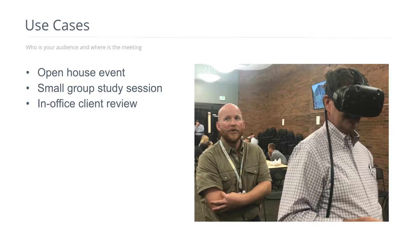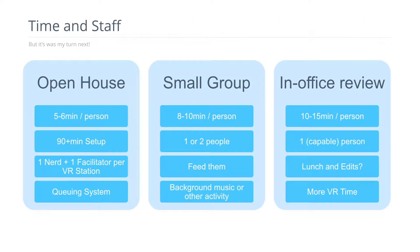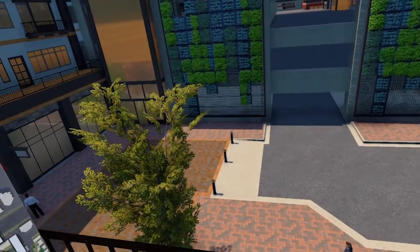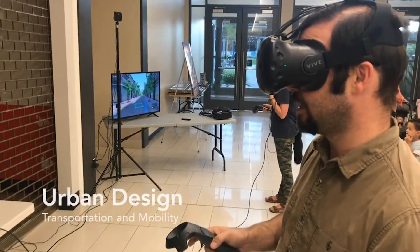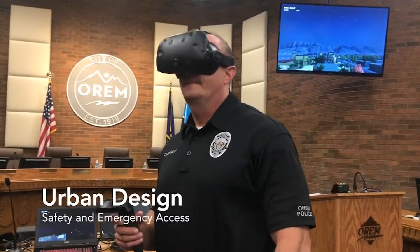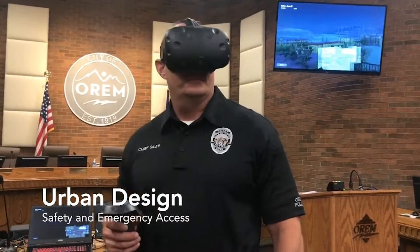Each one of these has particular expectations, requirements, and slightly different approaches. One of those is time. It's really easy to get focused on creating the experience and not being able to share it with enough people. This is especially true in the open house scenario. In the Orem case study, we created a day-night cycle — five minutes of daytime and one minute of night — allowing six minutes per person. That last minute was them taking off the hardware and letting the next person in. We told them ahead of time to watch the sky — that's how much time they had before we moved on.